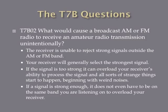What would cause a broadcast AM or FM radio to receive an amateur radio transmission unintentionally? The answer is the receiver is unable to reject strong signals outside the AM or FM band. Most receivers will produce audio for whatever frequency they're tuned to. However, if a broadcast AM or FM radio receiver is exposed to a very strong amateur radio transmission, the strength of that transmission may overwhelm that receiver's selectivity, causing it to produce audio for the amateur transmission — even if it's not on the same band.